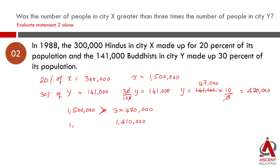Is 1,500,000 greater than 1,410,000? Yes. We have been able to come up with a definite yes as the answer. So Statement 2 alone is sufficient to find the answer.